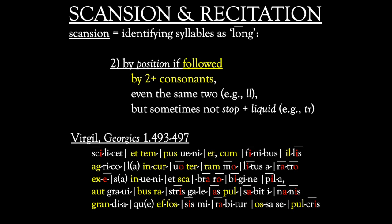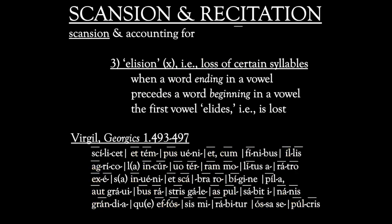Moving on to step two. On this slide, every syllable that is scanned as long by position is marked in yellow — every syllable whose vowel is followed by two or more consonants. Now we can add macrons over those long syllables too. In practice, until you've memorized a solid core of vowels that are long by nature, length by position is an easier and more reliable place to start. Just look for every example of a vowel followed by two or more consonants.